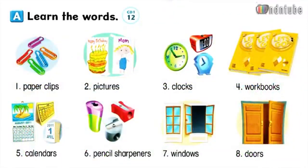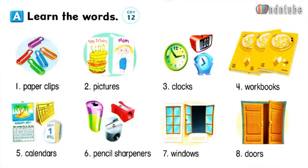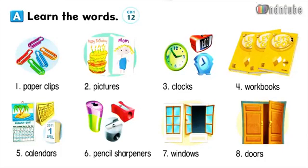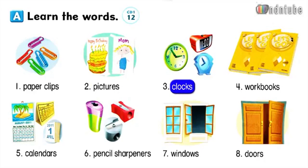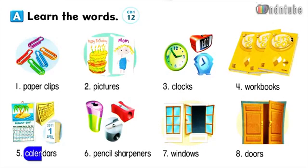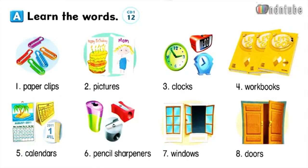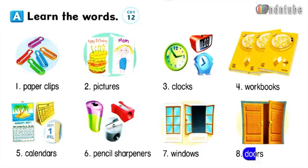Let's learn more. A. Learn the words. Number 1: paperclips. Number 2: pictures. Number 3: clocks. Number 4: workbooks. Number 5: calendars. Number 6: pencil sharpeners. Number 7: windows. Number 8: doors.